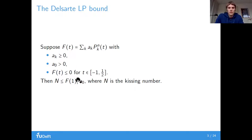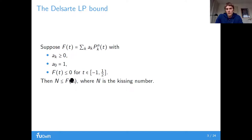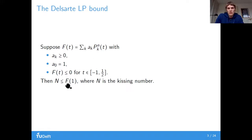If we scale such that the first coefficient equals one, the bound doesn't change but it gets a little bit easier to work with. We can use a normalization such that these polynomials equal 1 at t equals 1. Then, to get a good bound, we make the coefficients the optimization variables and ask what function makes the bound as good as possible.